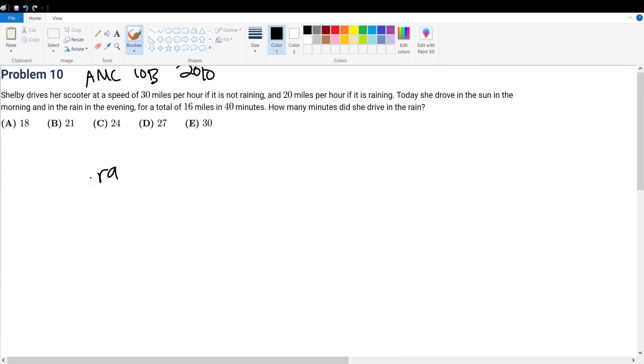So when it's not raining, she drives 30 miles per hour, and when it is raining, that's 20 miles per hour.